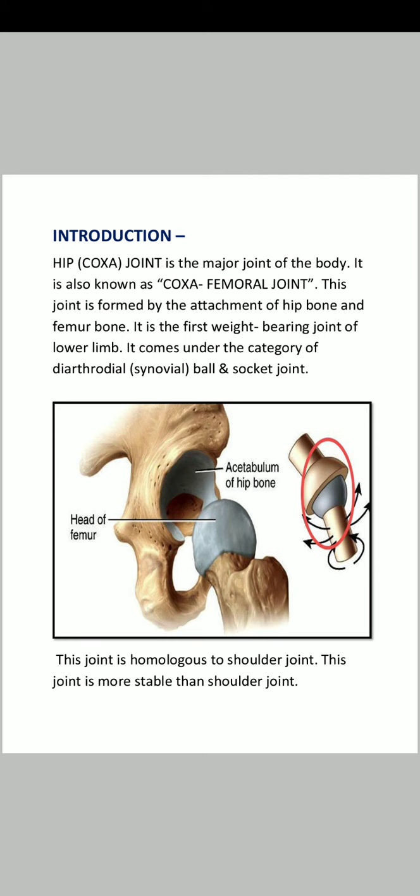This joint is formed by the attachment of the hip bone and the femur bone. It is the first weight-bearing joint of the lower limb. From the waist downward, this is the first joint that bears our body weight, which is why its importance is greater.